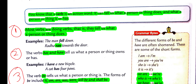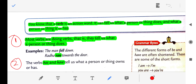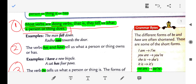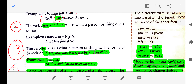There are four types of verbs. First, most verbs are doing verbs — they tell us about what a person or thing does. For example, 'The man fell down' tells us what the man does. Another example: 'Rather is running towards the door' — here 'rather' is the subject and 'running' is the action he is doing. So 'run' in that sentence is the verb.